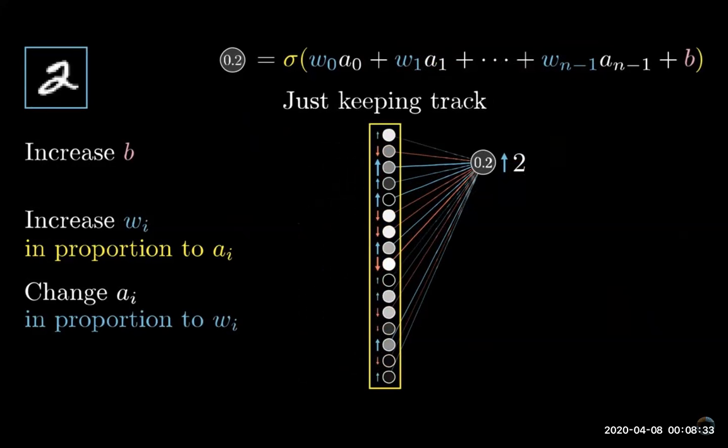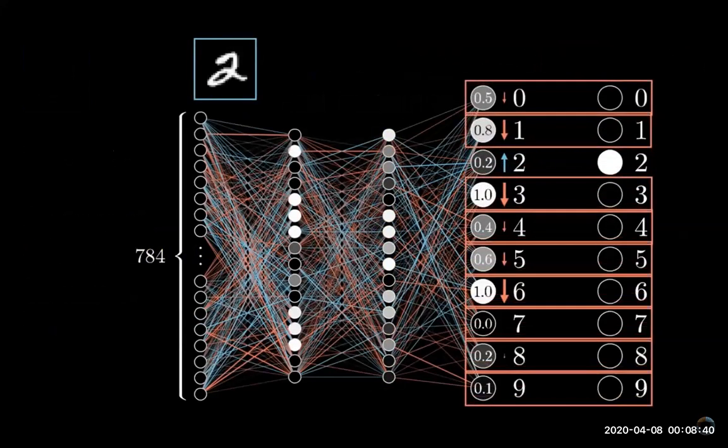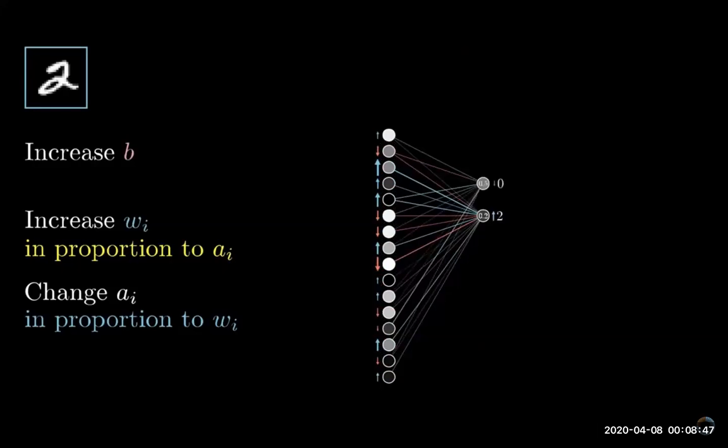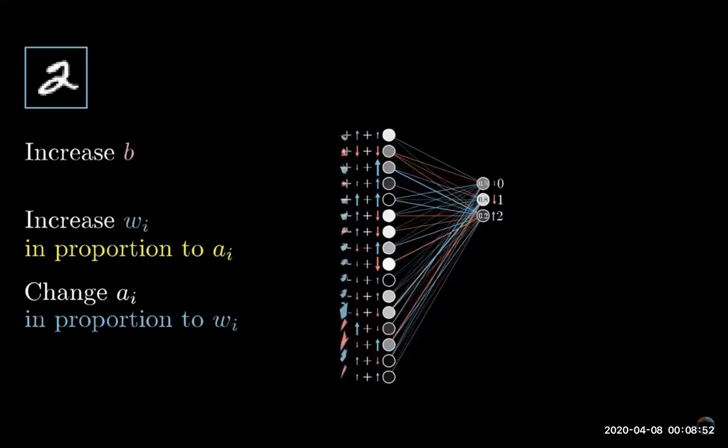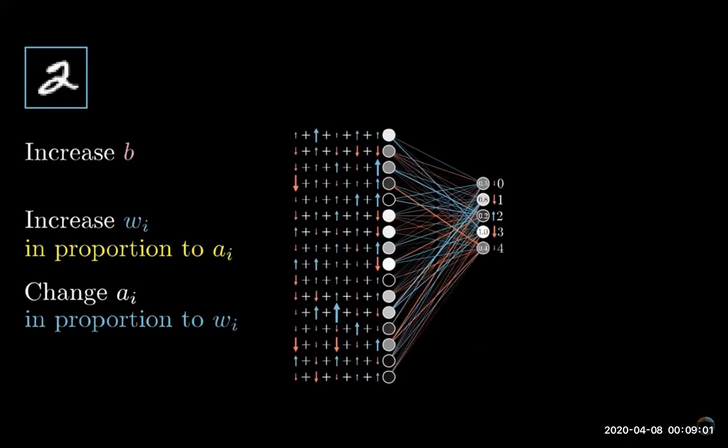Of course we cannot directly influence those activations, we only have control over the weights and biases. But just as with the last layer, it's helpful to keep a note of what those desired changes are. Remember we also want all of the other neurons in the last layer to become less active, and each of those other output neurons has its own thoughts about what should happen to that second to last layer.